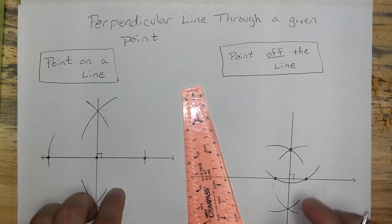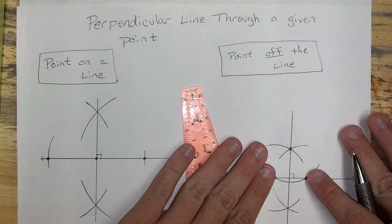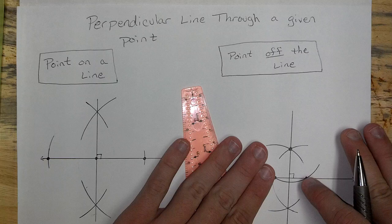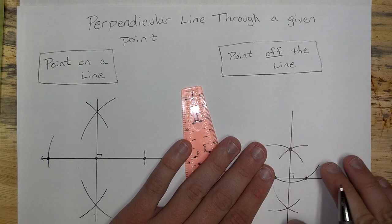So, either way you look at it, it's a bisector construction. Create two endpoints so that you can bisect the tiny little segment, and that will give you a perpendicular line.